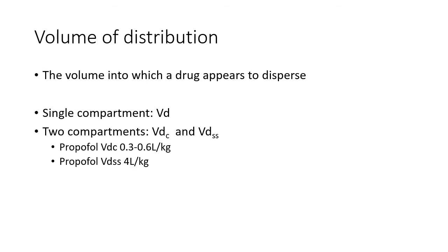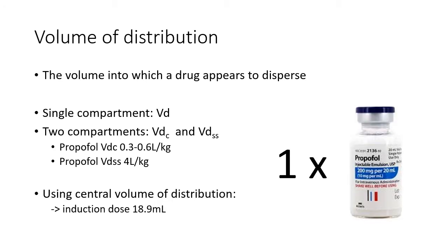The reason that answer is wrong is that there is more than one type of volume of distribution. Many drugs are said to have a central volume of distribution. For propofol, this is in the order of 0.3 to 0.6 litres per kilogram, or somewhere between 2 and 4 litres. If we use those numbers, we arrive at the much more reasonable figure of 19 millilitres. And, as we all know, the dose of any drug is one vial, so it must be right.